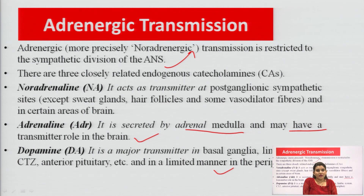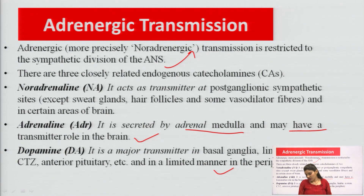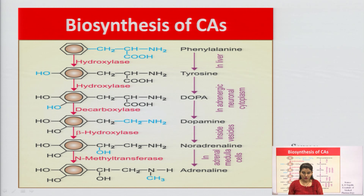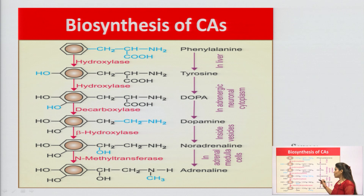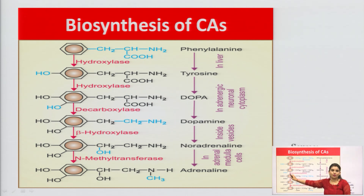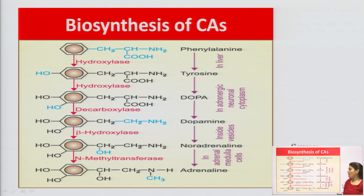Noradrenaline is released from the adrenergic nerve ending. Adrenaline is released from the adrenal medulla, and dopamine is released from the dopaminergic ending but synthesized in the adrenergic nerve ending. This is the biosynthesis pathway of catecholamines. They are called catecholamines because of the catechol ring — a benzene ring with two OH groups — with an amine group attached to this ring.